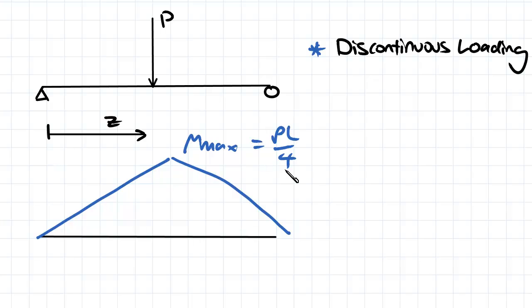So if you remember the past examples that we've been through, the bending moment diagram has always been continuous. So that means when we've used the equation d²v/dz² equals M over EI, we've always had a constant common equation for bending moment.